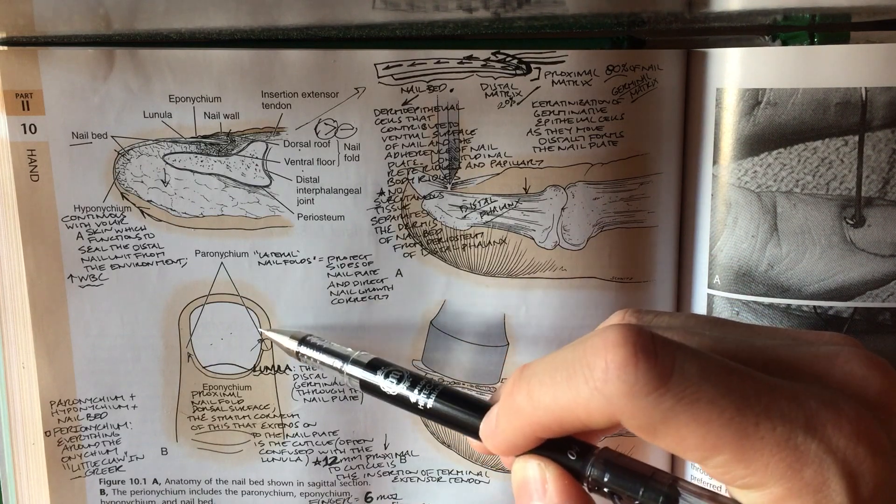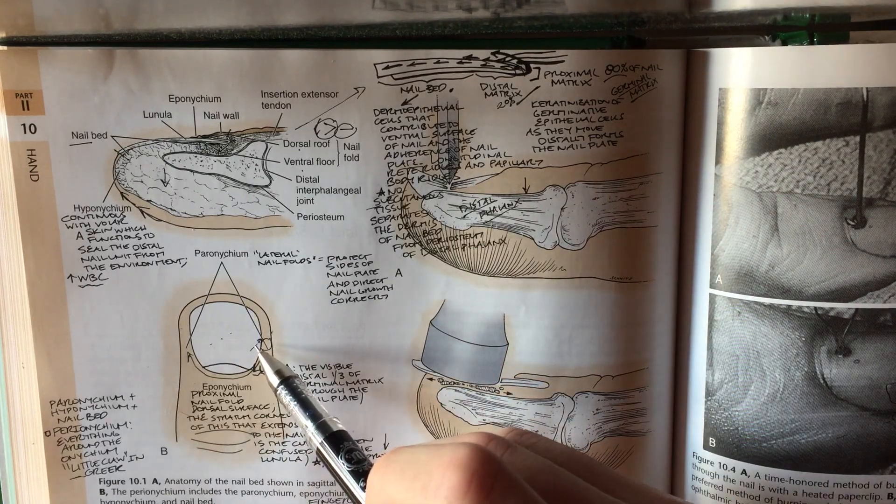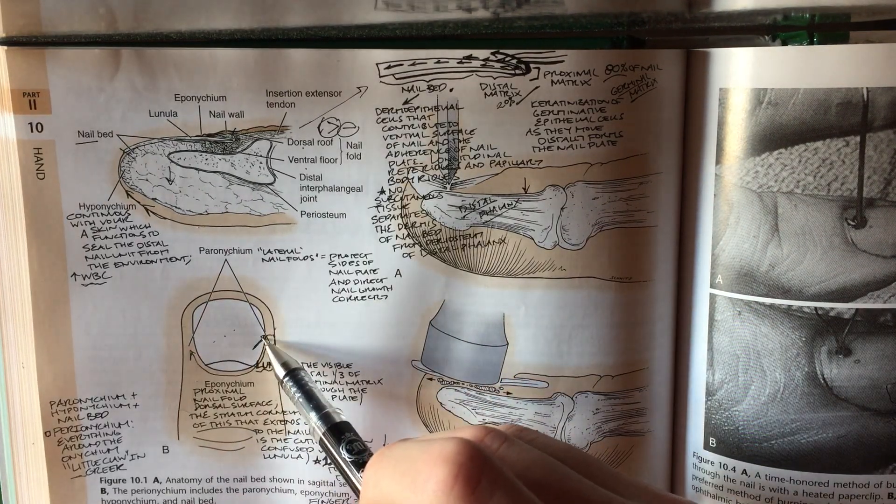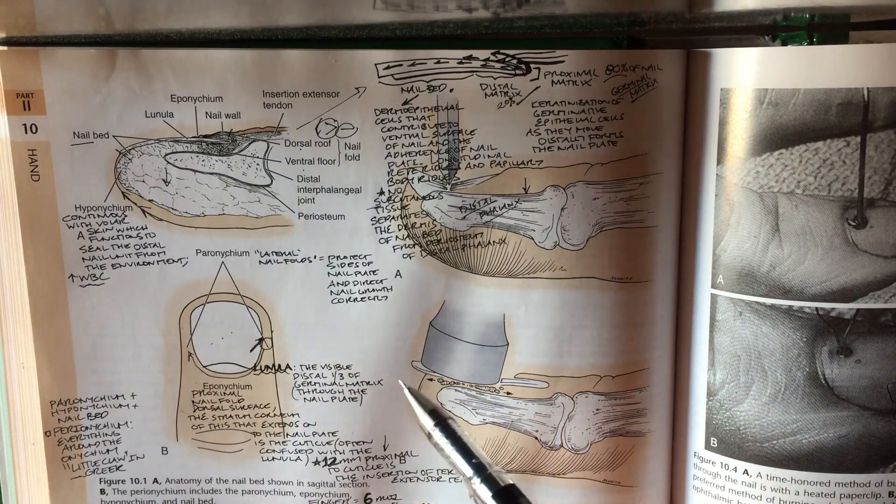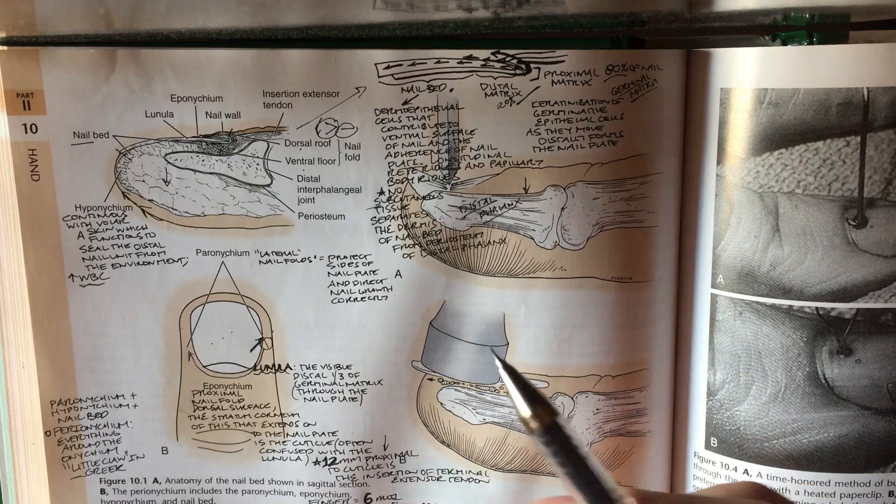Sometimes you can get perionichial infections, particularly when you go get a mani-pedi and the instrument will push some bacteria into the perionichial fold and you can get a perionichia which needs to be drained or soaked and then monitored.